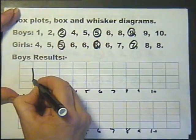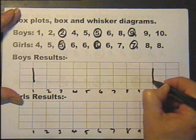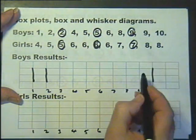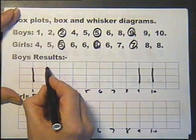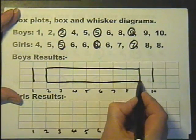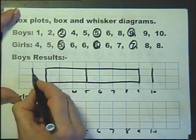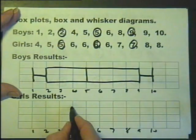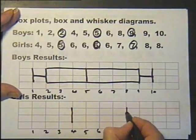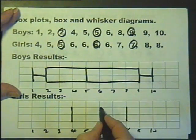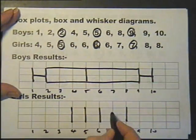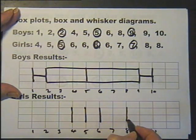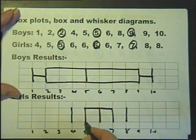Okay, boys. Goes from 1 to 10. There's the whiskers. The lower quartile is 2. The upper quartile is 9. So there's the box. And the median is there. So there's the box plot, or the box and whisker for the boys. Now for the girls. The lowest score of the girls. The highest score of the girls. The median. The lower quartile. The upper quartile. There you go.